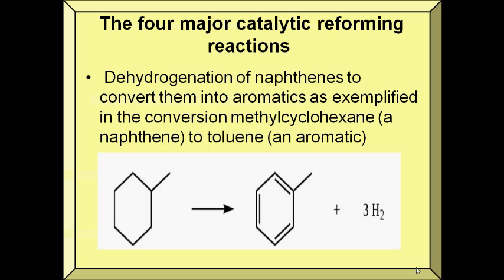There are four major catalytic reforming reactions, one of which is dehydrogenation. Dehydrogenation is a reaction process in which hydrogen is removed from a substance, especially the production of unsaturated organic compounds from saturated ones. You can see here that the hydrogen of methylcyclohexane is removed and it yields toluene.